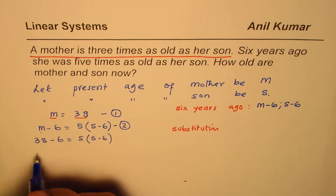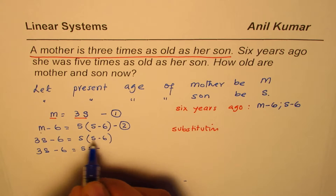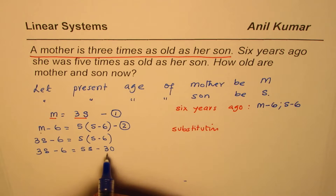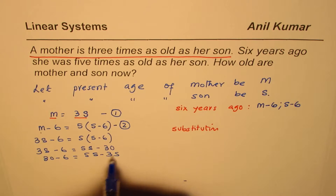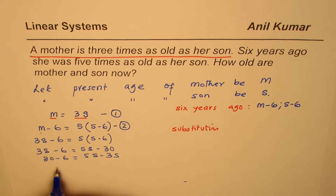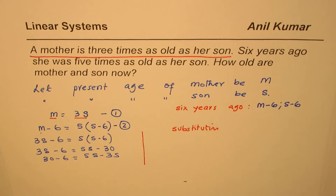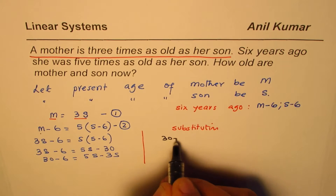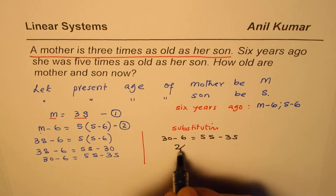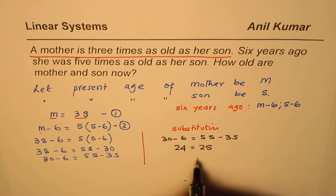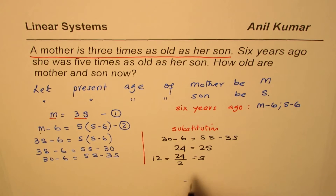Let's open the bracket. Applying the distributive property on the right side, we get five times s minus five times six, which is 30. Rearranging, 30 minus six equals five s minus three s. So 30 minus six is 24, equals two s. Therefore son's age is 24 divided by two, which is 12.